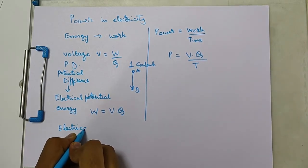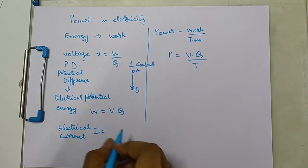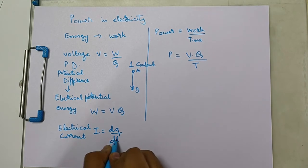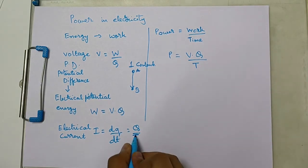current, I, is defined as the rate of flow of charge, dq/dt or q/t, charge flowing per unit time.